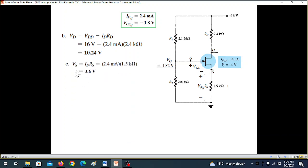Next point was to find VS. VS is this voltage here which is ISRS or IDRS. And again putting in the value we get VS to be 3.6V.